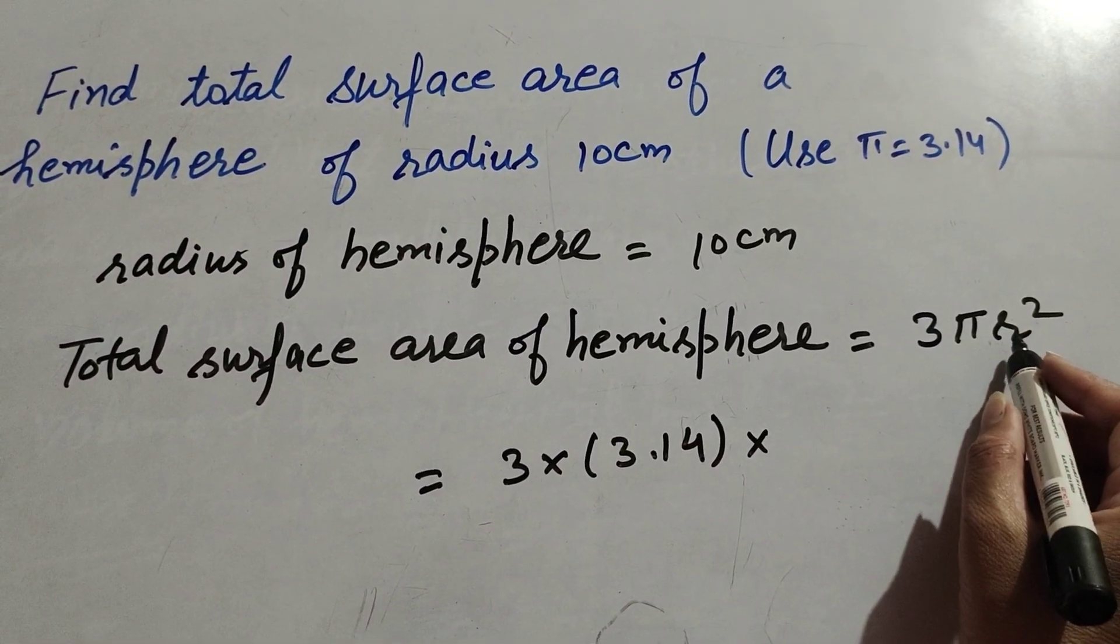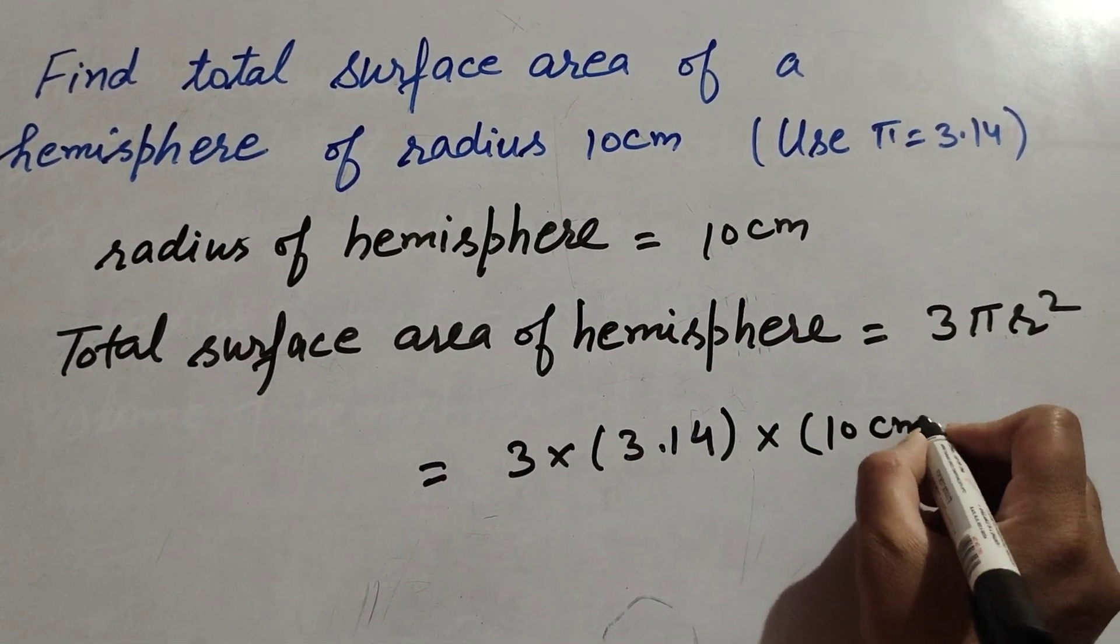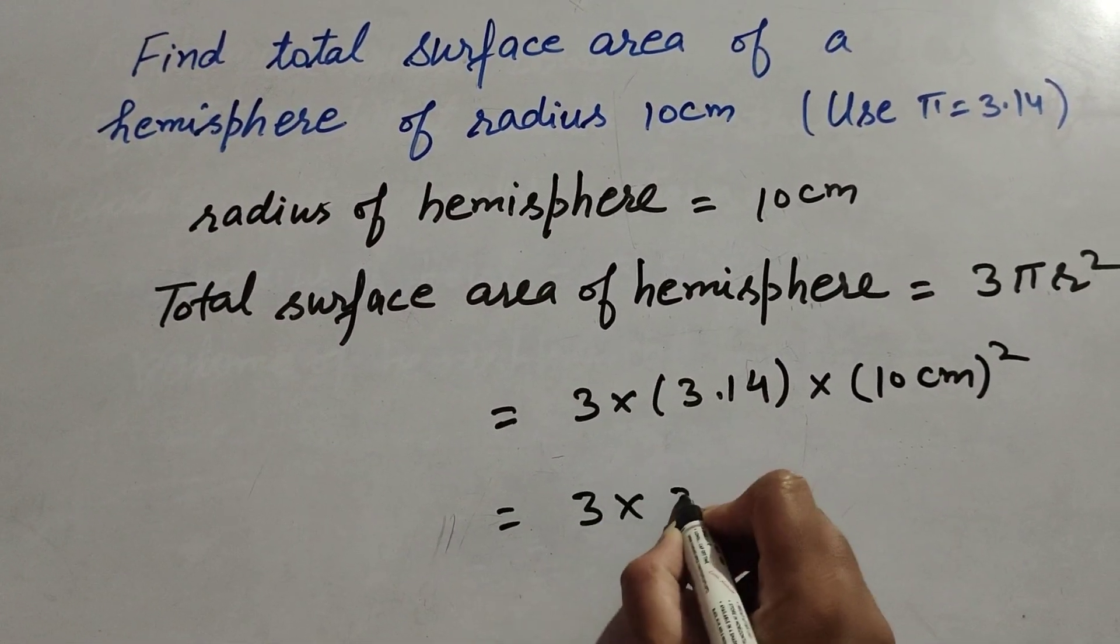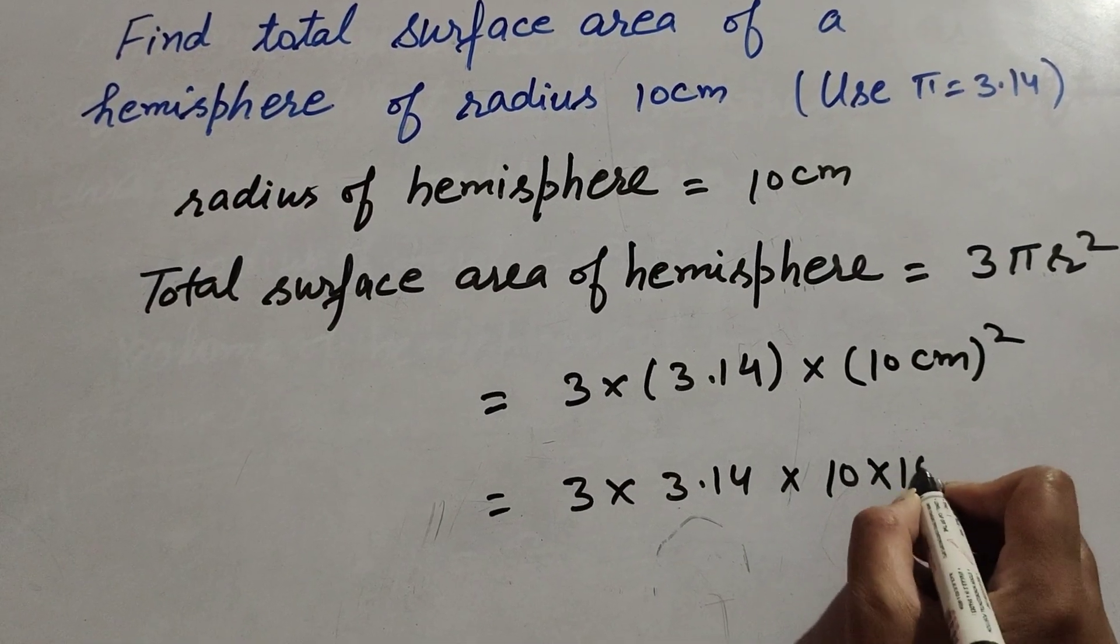Multiply r², where r is radius, it is given 10 centimeter squared. So 3 × 3.14 × 10 × 10.